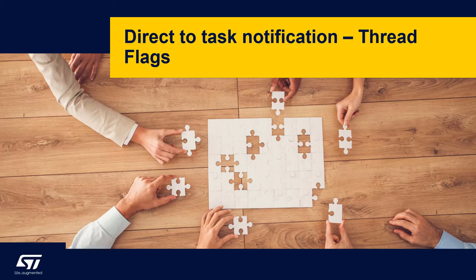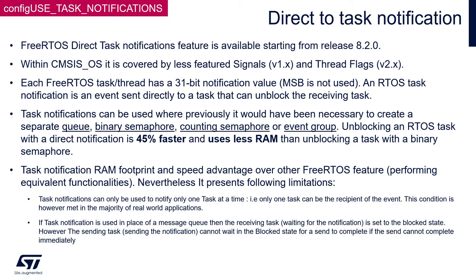Let's discuss a very interesting communication mechanism within FreeRTOS – direct-to-task notification. Direct-to-task notification is available within FreeRTOS from version 8.2.0. Within CMSIS-OS, it is covered in version 1.0 as signals and in version 2 as thread flags. To use this mechanism within FreeRTOS, it is necessary to enable configUSE_TASK_NOTIFICATIONS within the FreeRTOSConfig.h file. This will add to each task control block two fields – a 32-bit notification value and an 8-bit notification state.